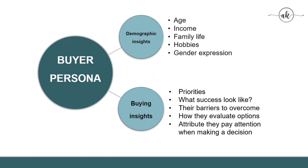Now we are going to look at buyer personas. There are two types: demographic insights and buying insights. Under demographic insights: age, income, family life, hobbies, and gender expression. Under buying insights, you carefully look at their priorities, what success looks like for your ideal clients, what barriers they must overcome, how they evaluate options, and what attributes they pay attention to when making a decision.